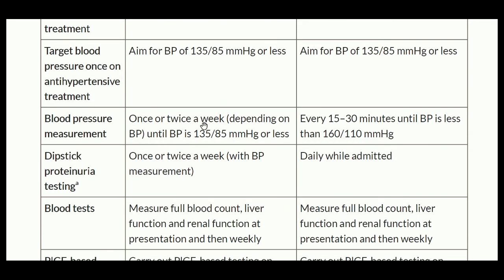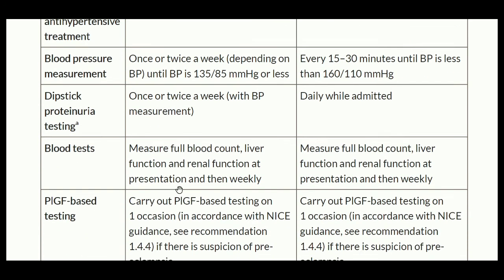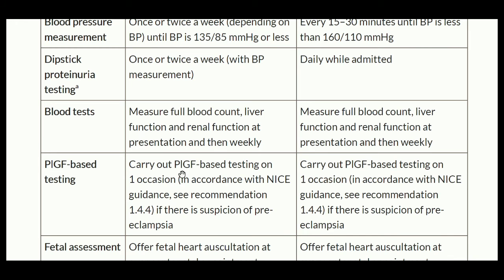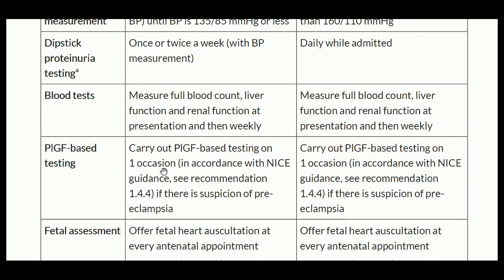For blood pressure measurement: in hypertension, check once or twice depending on BP until it is 135/85 or less. In severe hypertension, check every 15 to 30 minutes until BP is less than 160/110. For dipstick testing: once or twice a week with BP measurement in hypertension, and daily while admitted in severe hypertension.